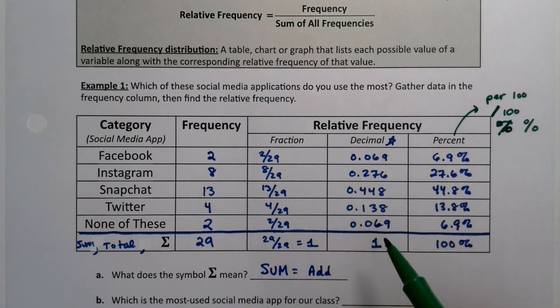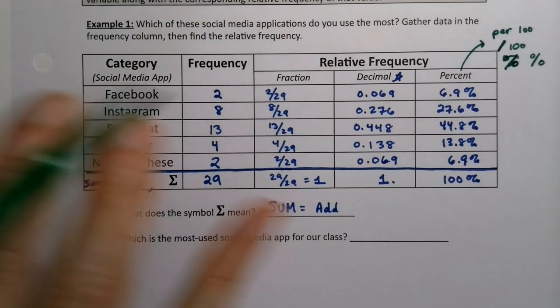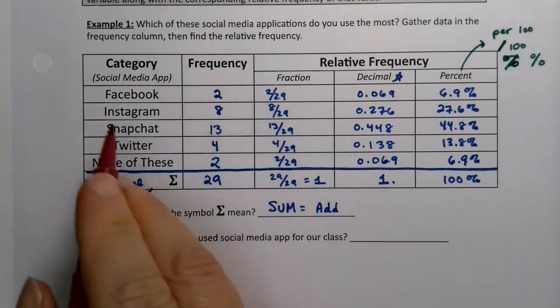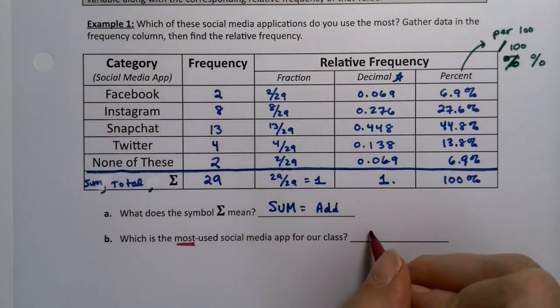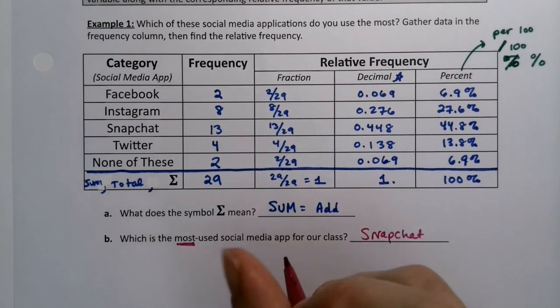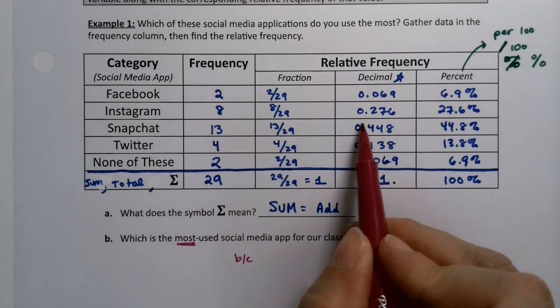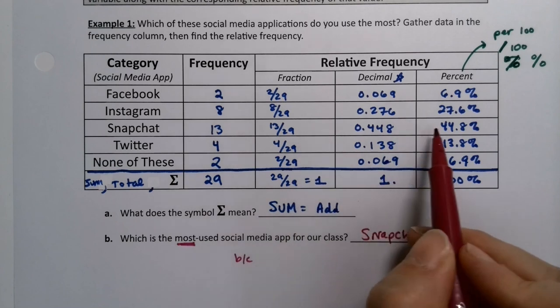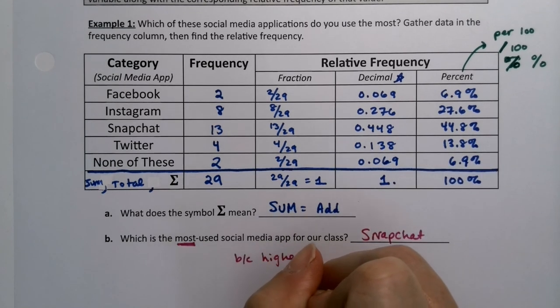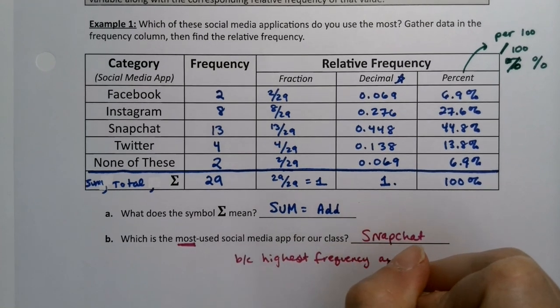What was the most used social media app? The most frequent, right? That would be Snapchat. So Snapchat was because it had the highest frequency, it had the highest fraction, it has the highest decimal, and it has the highest percent relative frequencies. All three of those are relative frequencies, so it had the highest frequency and relative frequency.